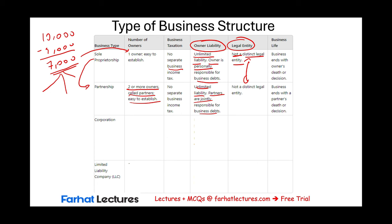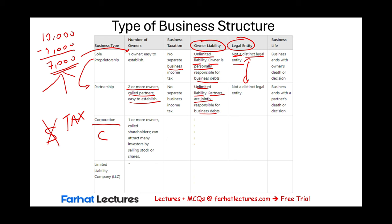Now let's move on to corporation — specifically a C corporation, as in Charlie Corporation, because we also have S corporations, which you'll learn about in your tax class. How many owners can a C corporation have? One or many — even millions. Any investor can buy into your corporation, or you can own 100% of the shares, or sell to the public. Publicly traded corporations have millions of owners.